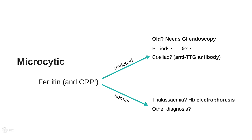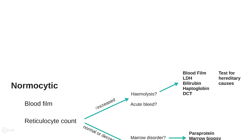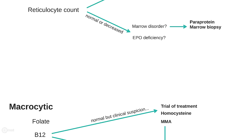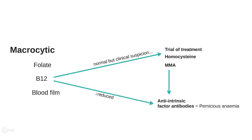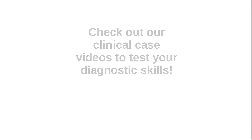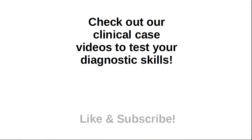In summary, a microcytic anemia should always make us think of iron deficiency, and we should suspect loss of blood from the gut due to cancer in older patients. Tests that help in diagnosing normocytic anemia include a blood film and reticulocyte count; bilirubin, LDH, haptoglobin, and direct Coombs test can suggest a cause for hemolysis. Paraproteins in urine or serum raise the possibility of myeloma; other bone marrow cancers may require a biopsy. Tests for macrocytic anemia include B12, folate, a blood film, liver function tests, and thyroid function tests.